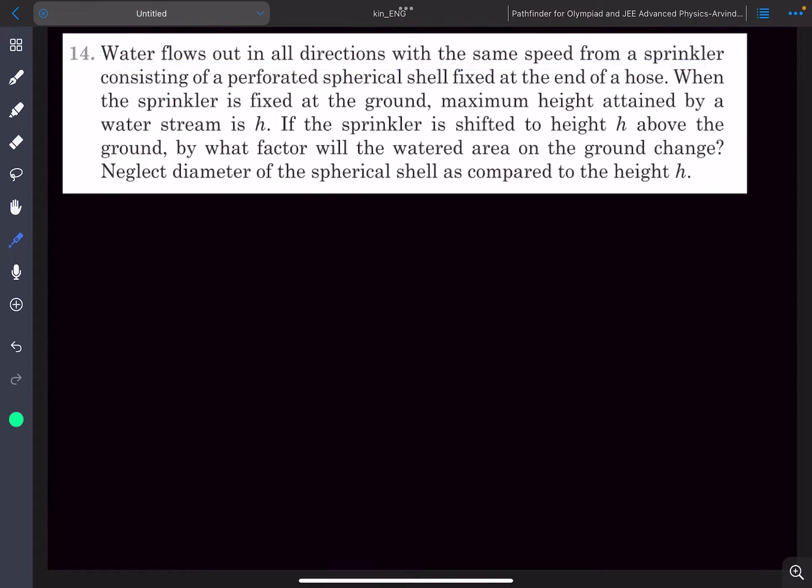When the sprinkler is fixed at the ground, the maximum height attained by the water stream is h. If the sprinkler is shifted to height h above the ground, by what factor will the watered area change?